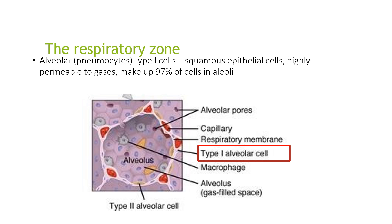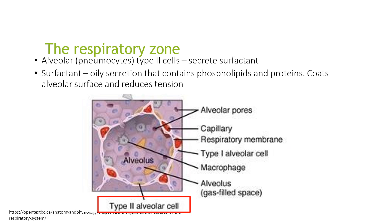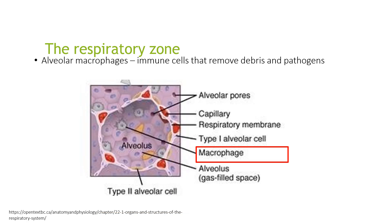Alveolar pneumocyte type 1 cells, or squamous epithelial cells, are highly permeable to gases and make up 97% of cells in the alveoli. You also have alveolar type 2 pneumocytes, which secrete surfactant — an oily secretion containing phospholipids and proteins that coats the alveolar surface and reduces surface tension. You also have alveolar macrophages, which are immune cells that remove debris and pathogens.